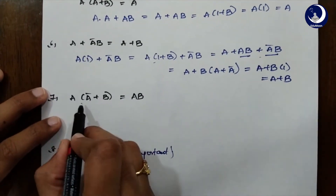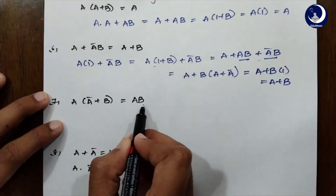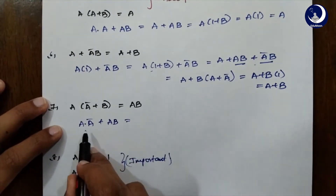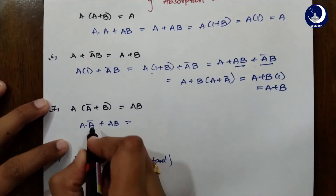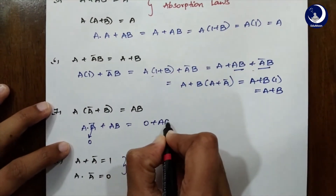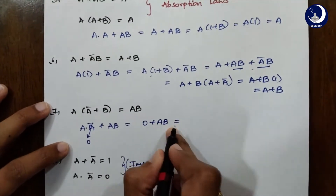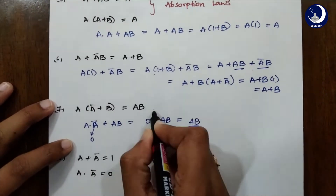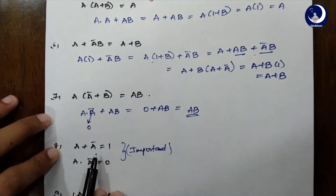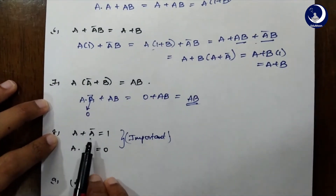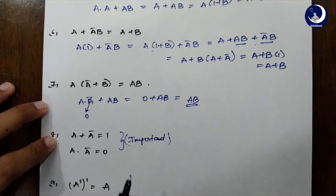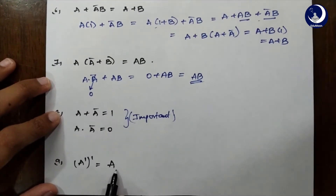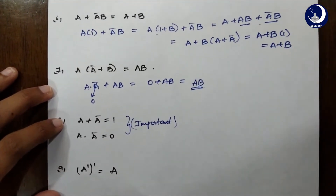Now A·(Ā+B)=AB. How do we solve this? Expanding: A·Ā + A·B. Now A·Ā=0, so this goes to 0 + AB. Zero plus anything equals that value itself, so 0+AB=AB, which is our result. You need to remember these two important formulas: A+Ā=1 and A·Ā=0. And the last one is double complement: the complement of the complement of A equals A.